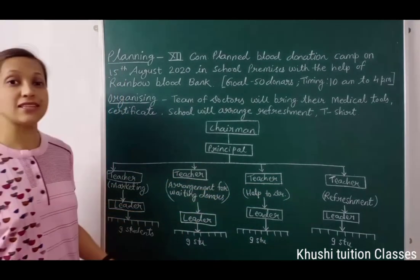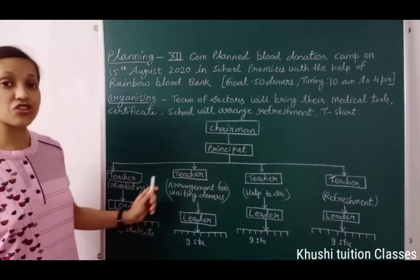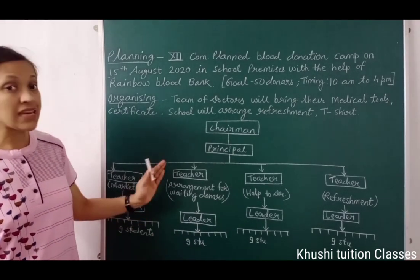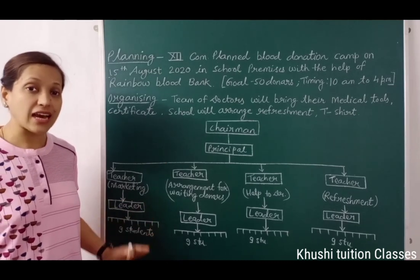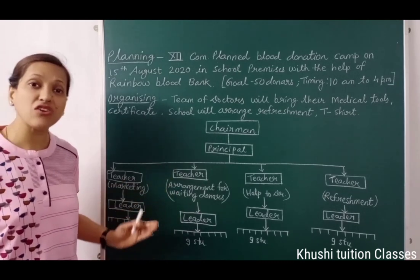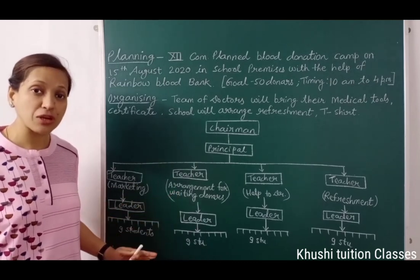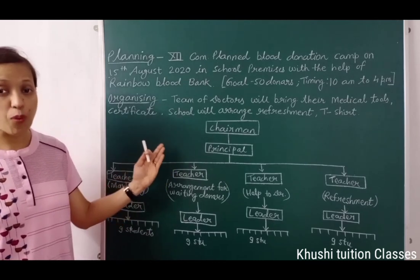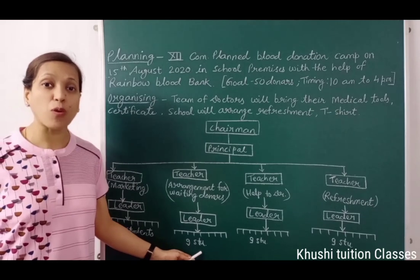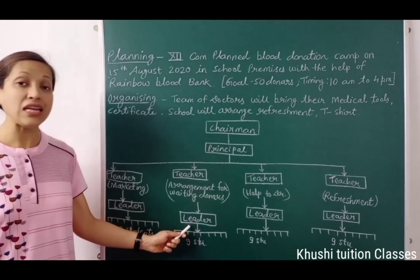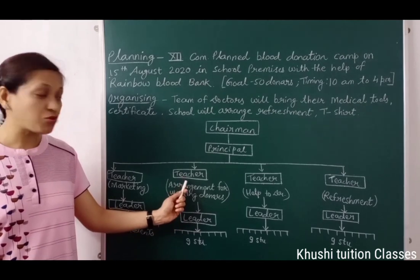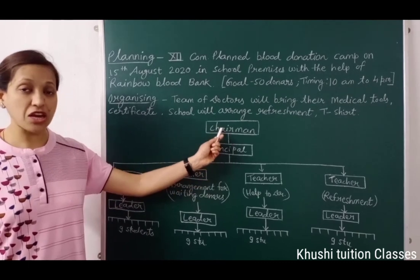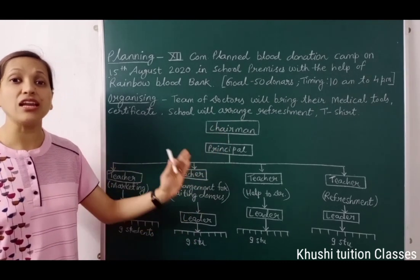So, this is the organizational structure. अब इस organizational structure में सभी को अपनी duties पता हैं. सभी की capability के हिसाब से उन्हें work दिया जाएगा. इनमें authority, responsibility, relationship — superior-subordinate relationship भी है. उन्हें पता है कि उन्हें किससे orders या instructions लेने हैं और किसे report करना है. जैसे किसी student को कोई problem है तो वह अपने leader से पूछेगा, leader यह बात teacher से पूछेगा, teacher यदि जरूरी हो तो principal से, और principal chairman से. So, this is the reporting relationship also.